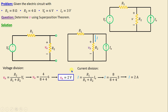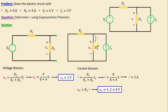According to Ohm's law, the voltage VB across the resistor R2 is equal to R2 times I. If we replace R2 and I with their numerical values, we obtain VB is equal to 8 volts.